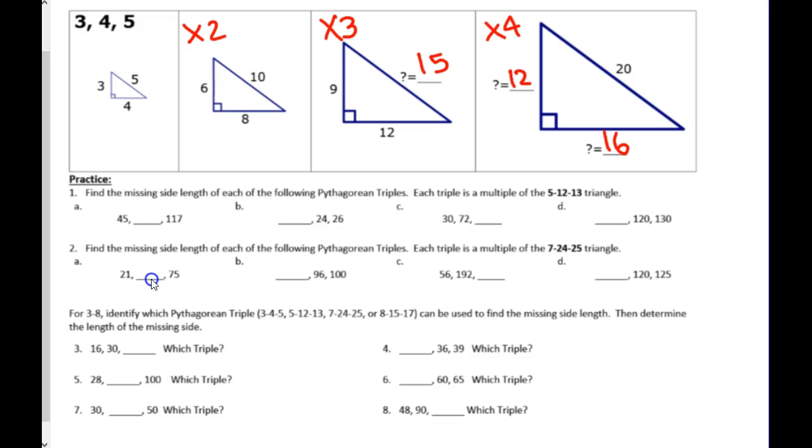3 through 8. Now, it's all free-for-all. It could be any of the four different triples. So, you're going to tell me which triple it is. So, right here in this blank area, you're going to put one of these four triples, and then you find the missing side length right there. Okay?